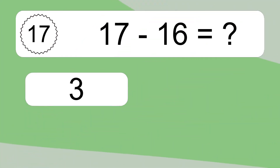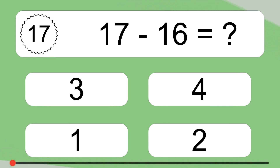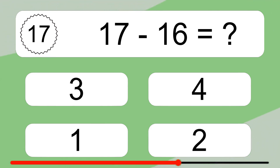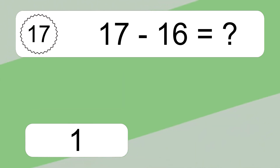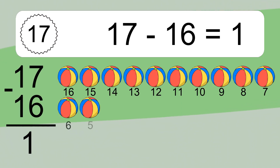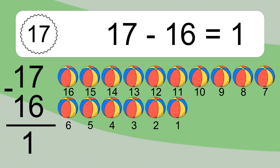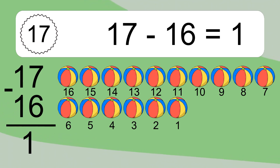17 minus 16 equals what? 17 minus 16 equals 1. Let's count it: 16, 15, 14, 13, 12, 11, 10, 9, 8, 7, 6, 5, 4, 3, 2, 1.